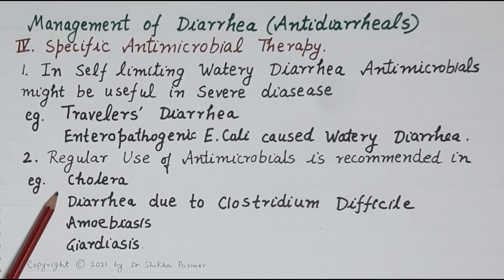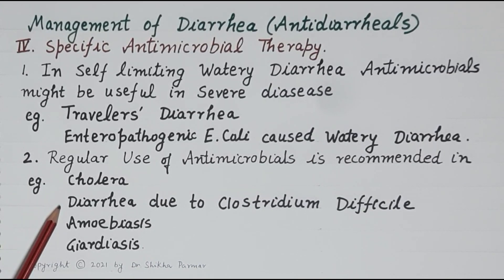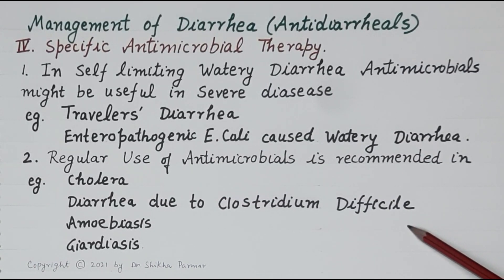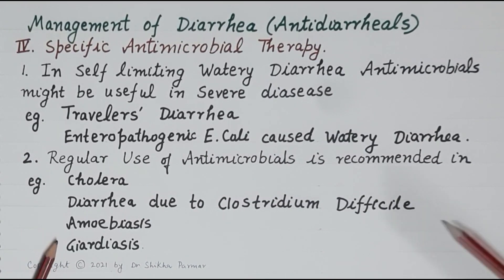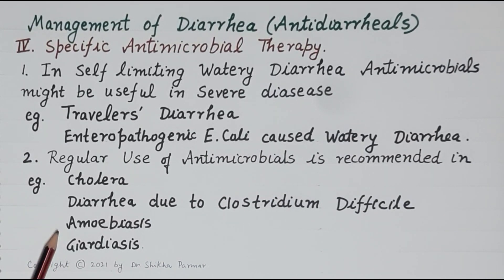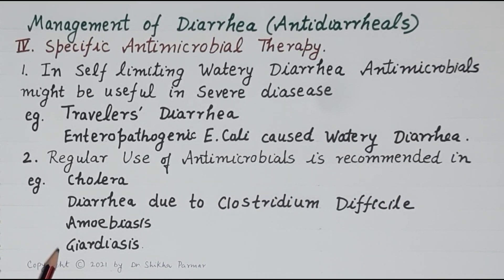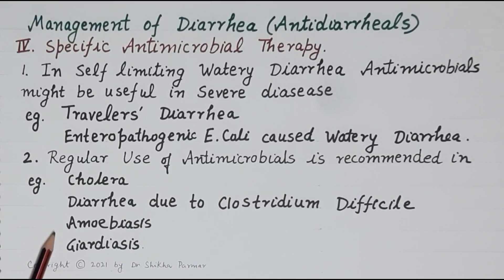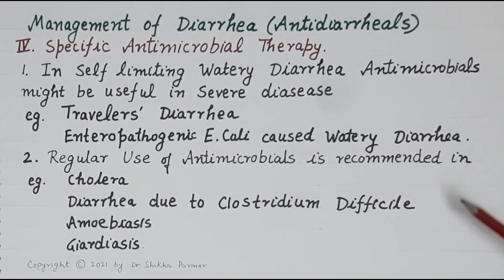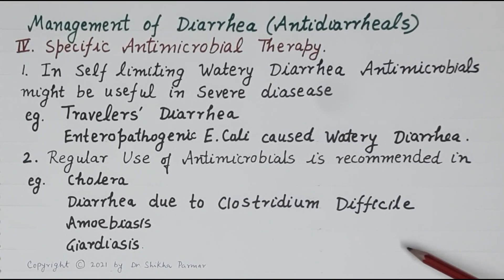Regular use of antimicrobials is recommended in certain diarrheas. For cholera, tetracycline is effective. For antibiotic-associated diarrhea caused by overgrowth of Clostridium difficile, metronidazole is used, with vancomycin as an alternative. Diarrhea caused by Entamoeba histolytica (amoebiasis) and the protozoan Giardia lamblia (giardiasis) are also treated with metronidazole.